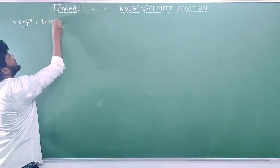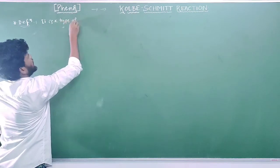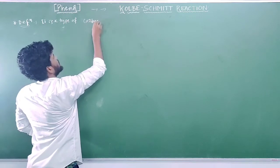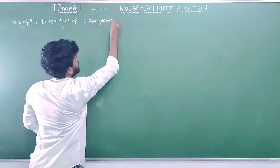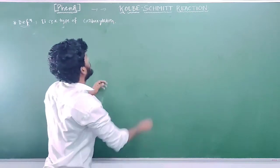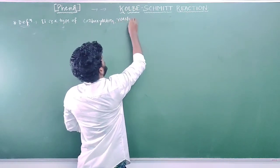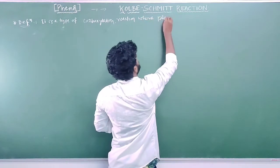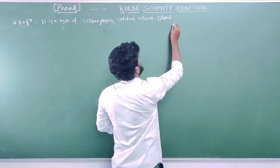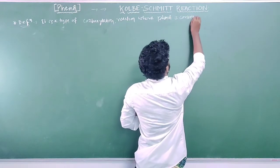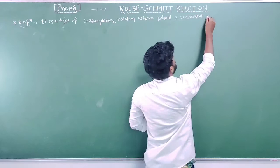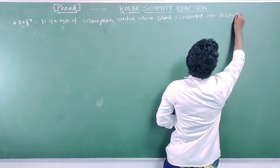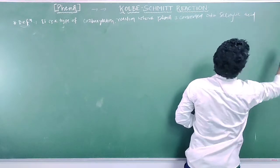It is a type of carboxylation reaction — carboxylation reaction means a COO minus ion group will be attached. In this carboxylation reaction, phenol is converted into salicylic acid.